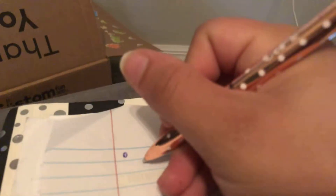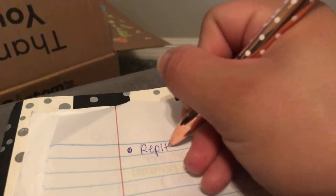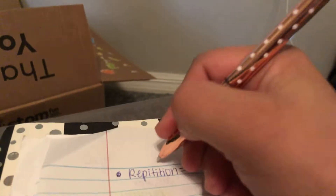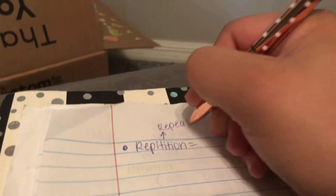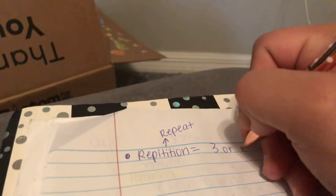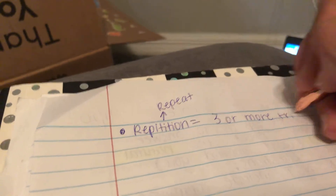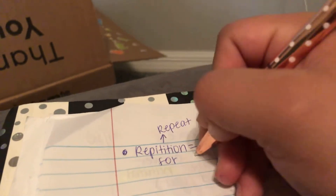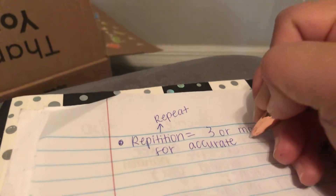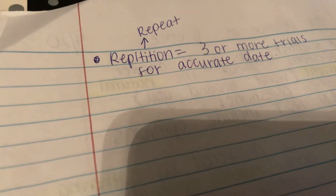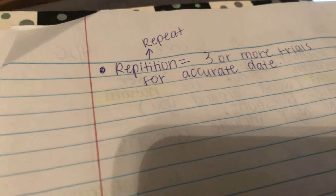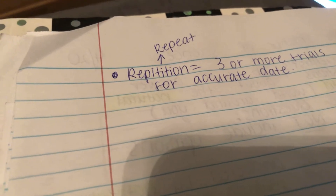I'm just in my science notebook — I literally just flipped the page. I want to write down two more little things here. First, write down the word repetition. Repetition equals repeat, but I'd like you to write down: three or more trials for accurate data. That is a word we are responsible for. Repetition means repeat, but you need to do things at least three times — three or more trials — to make sure your data is valid or accurate.